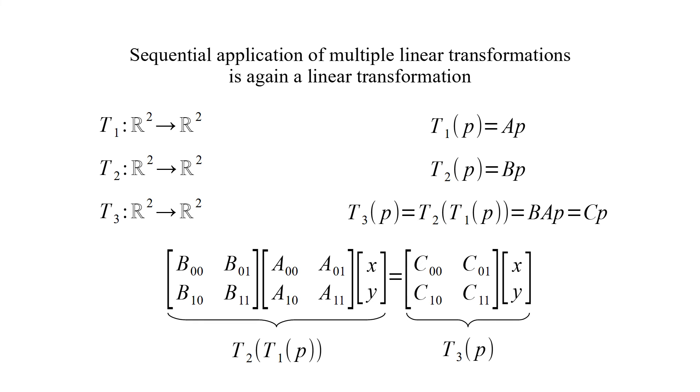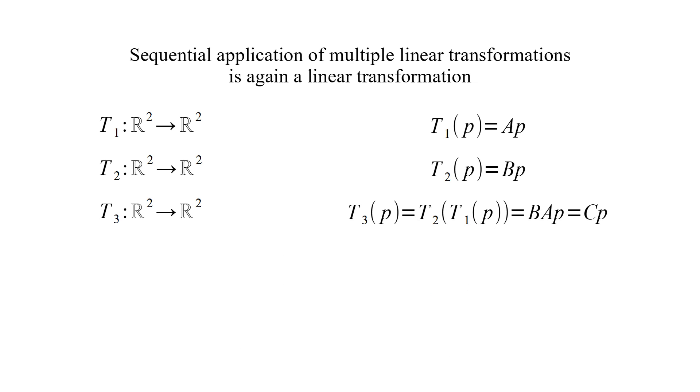Multiplying transformation matrices B and A, we get a new transformation matrix C. Note that order of transformation is important. B times A is not equal to A times B.